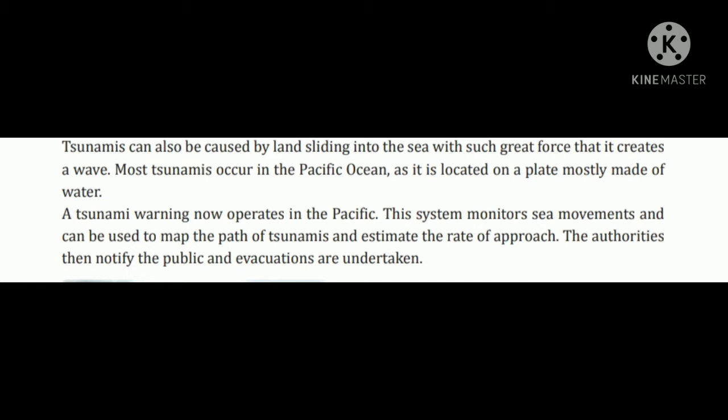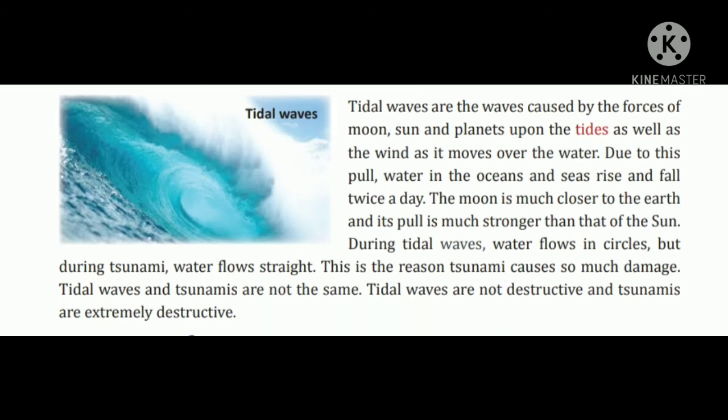A tsunami warning now operates in the Pacific. This system monitors sea movement and can be used to map the path of tsunami and estimate the rate of approach. The authorities then notify the public and evacuations are undertaken. Is system se jo sea ka movement hai uske map ko use karke tsunami ke path ko aur uske rate ko anumaan lagaya ja sakta hai, jisse ki janta ko suchit kiya ja sake.